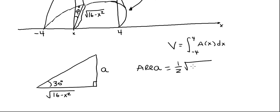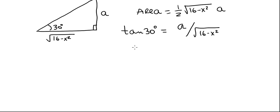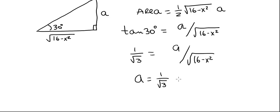The area of this triangle is one half times the square root of 16 minus x squared times A. We need to express A as a function of x. The tangent of 30 degrees equals the opposite side over the adjacent side, that is A divided by the square root of 16 minus x squared. Tangent of 30 degrees is 1 over square root of 3, so A equals 1 over square root of 3 times the square root of 16 minus x squared.